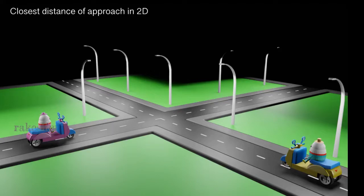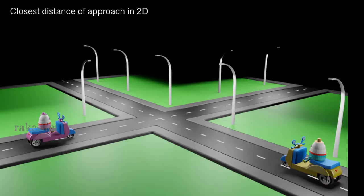Good morning. Today we will look at the closest distance of approach in two-dimensional motion. We will take a specific case where there are two persons moving towards an intersection point. We need to find out, during the persons crossing the intersection point, what is the closest distance between them.